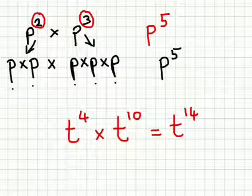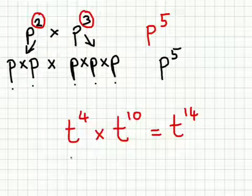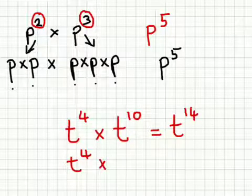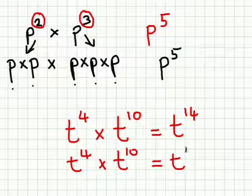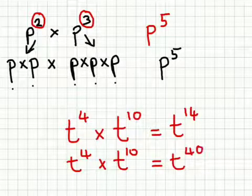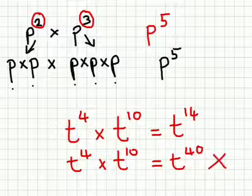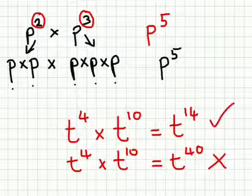because all you do is add the powers. The main mistake that is made is people do t to the power 4 times t to the power 10, and get t to the power 40, because they multiply the powers together. This is wrong. This is right.